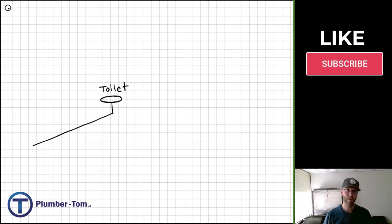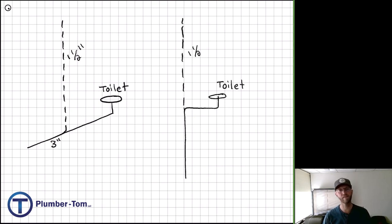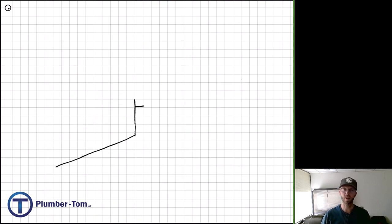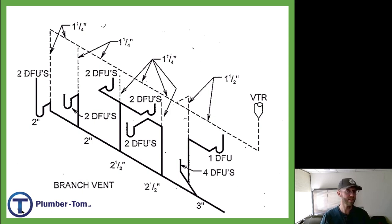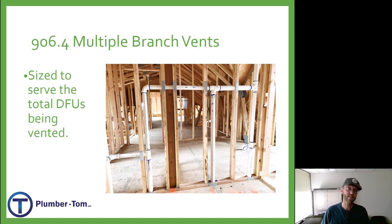Let's review what we know. For vent sizing, we have a minimum requirement of half the size of the drain pipe. Toilets on three inch pipes would each need one and a half inch vents. A lav could go with a smaller vent — as small as one and a quarter, but that's the minimum possible. We can get into branch venting where a bunch of drainage fixtures in a row have all their vents connected together. We'd look at each drain being served and the drainage fixture units — for most of these, one and a quarter or really one and a half inch is practical. Section 906.4 tells us that when we have multiple branch vents, the vent must be sized to serve the total drainage fixture units being vented.